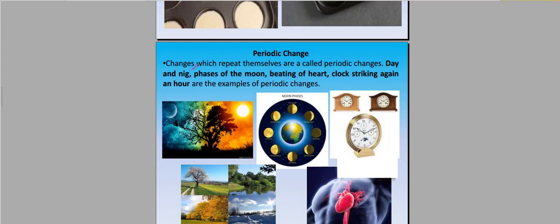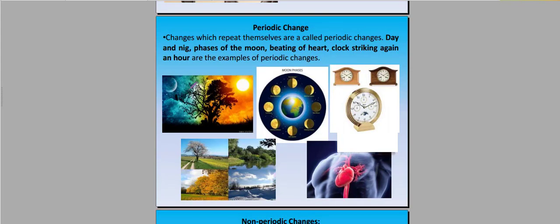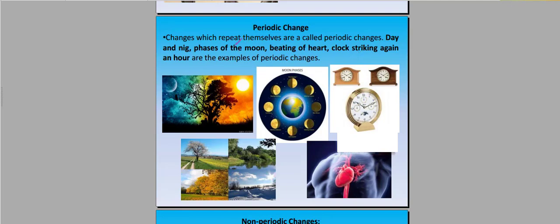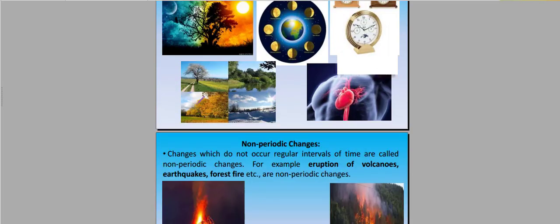Periodic change - changes which repeat themselves are called periodic change. Day and night, phases of the moon, beating of heart are examples of periodic change. Periodic change occurs at a particular interval, like heartbeat. There is a time interval for beating. Day and night is fixed. There are different phases of the moon at time intervals which repeat themselves.